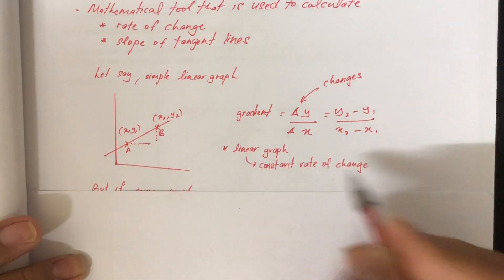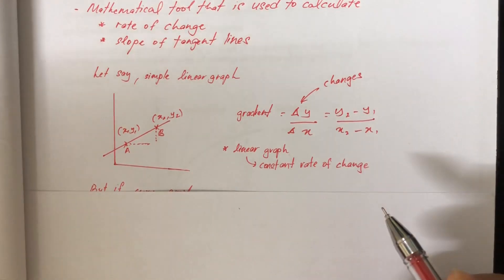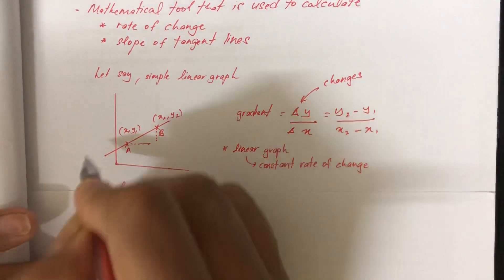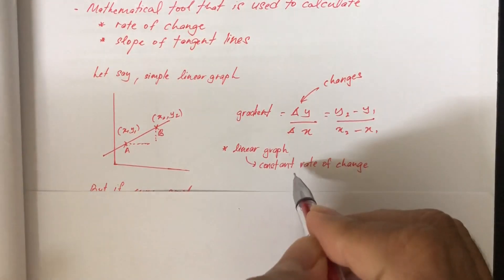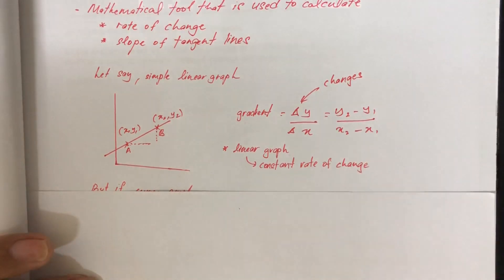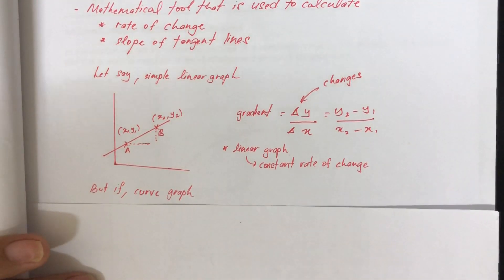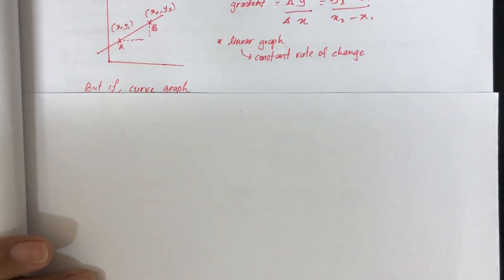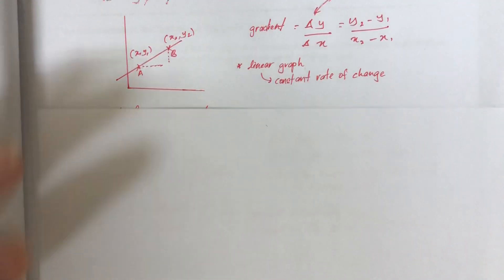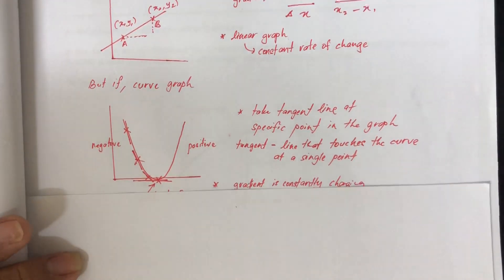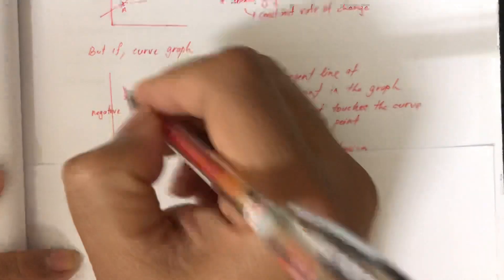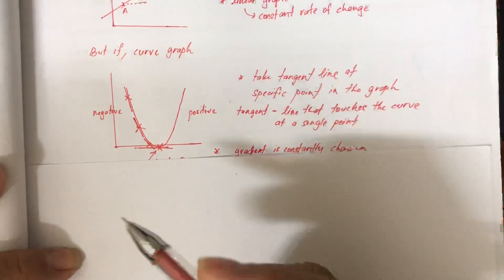For a linear graph, the gradient is the same for each point — meaning a constant rate of change. It doesn't change between points; it is constant. But what if we have a curve graph? What if we want to find the gradient for a curve graph? For example, a quadratic graph — in this case, we have to find it using the slope of a tangent.